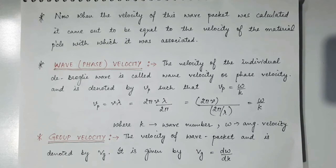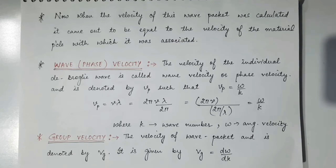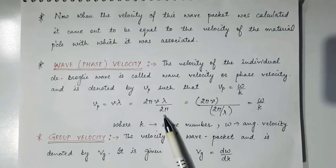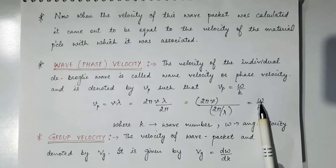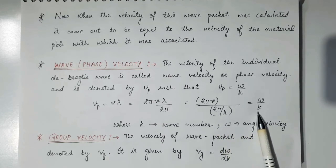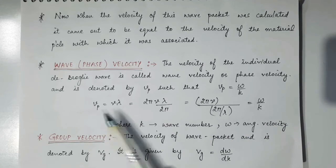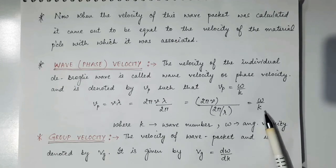What is wave velocity? There are a number of waves in the wave packet and each wave has a different speed, different velocity, and different wavelength. The velocity of an individual wave in the wave packet is known as wave velocity or phase velocity, given by Vp (p for phase, v for velocity). It is given by nu times lambda — since c equals nu lambda, Vp equals nu lambda. Multiplying and dividing by 2π: 2π nu is angular velocity omega, and 2π by lambda is wave number k. So phase velocity is the ratio of angular velocity to wave number: Vp = omega / k.